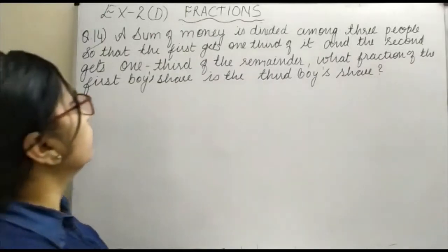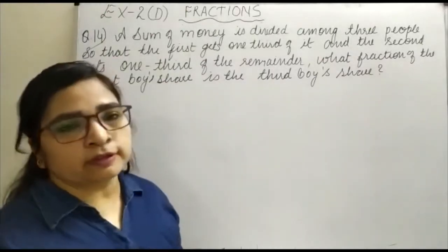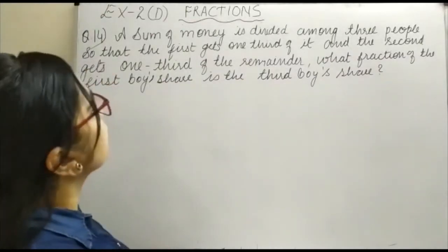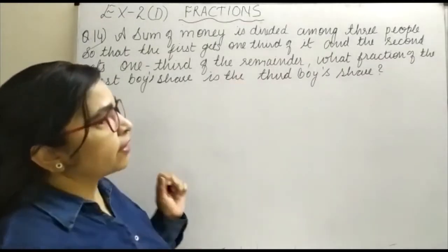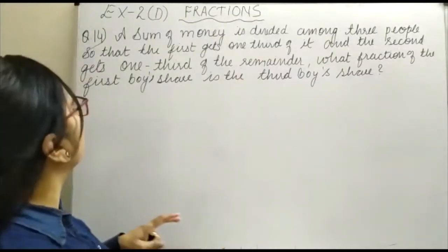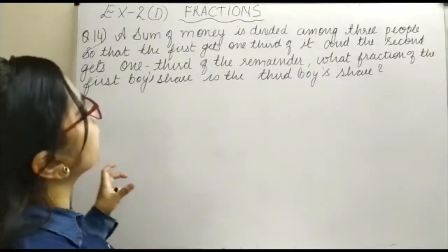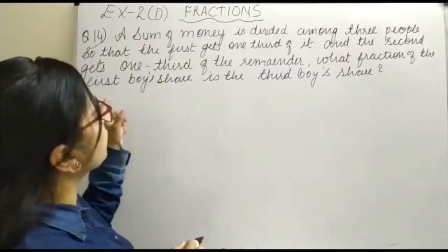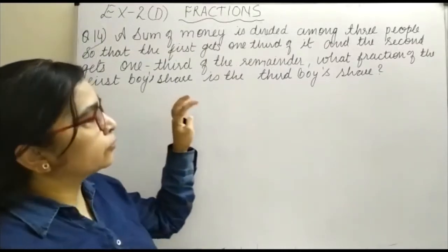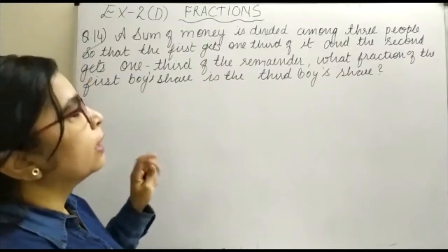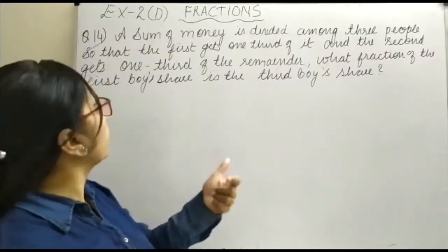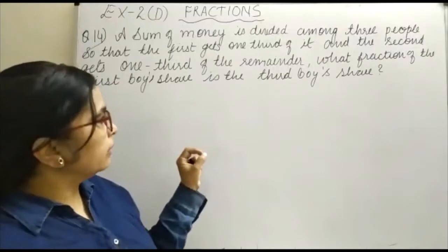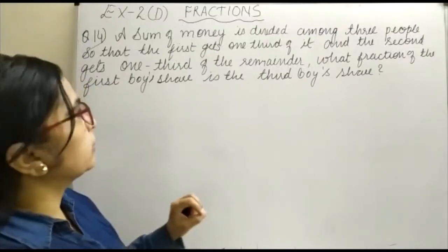Hello everyone, today we are here to discuss another word problem. Our question is: a sum of money is divided among three people so that the first gets one third of it and the second gets one third of the remainder. After that, you have to find what fraction of the first person's share is the third person's share.